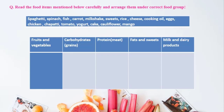This is the last worksheet I need you to fill in. Look at the food items above and sort them into the correct food groups: spaghetti, spinach, fish, carrot, milkshake, sweets, rice, cheese, cooking oil, eggs, chicken, chapati, tomato, yogurt, cake, cauliflower, mango. I hope you all can do it. Good luck, and that would be all for today.